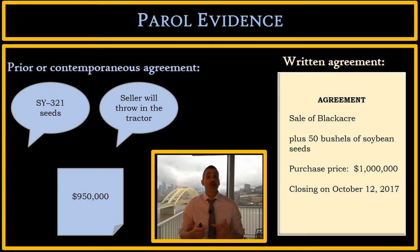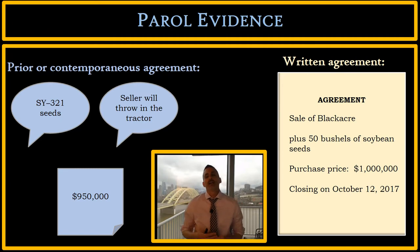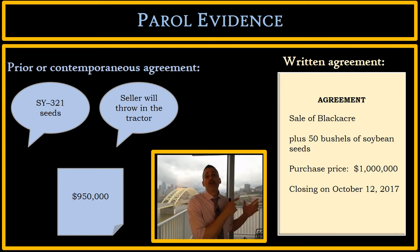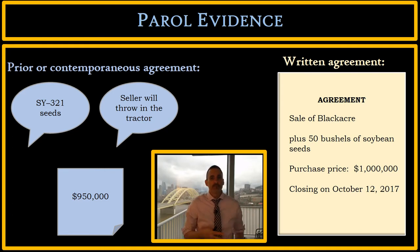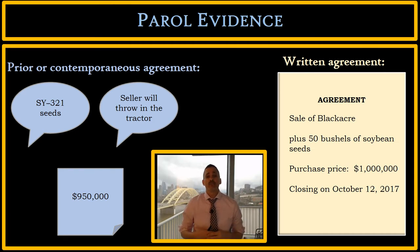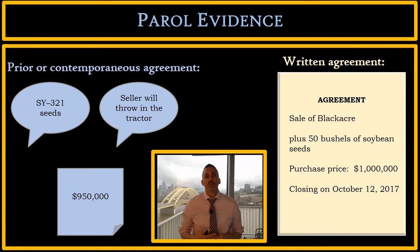Let's look at them one by one. First, let's look at the one that says SY-321 seeds. What is that evidence doing? That evidence is explaining an ambiguous term in the written agreement. The ambiguous term is 'soybean seeds' — there are lots of different types of soybean seeds. This Parole Evidence, SY-321 seeds, is explaining an ambiguous term in the written agreement. We apply the plain meaning rule, and under it, that Parole Evidence will most likely be admissible to the jury.